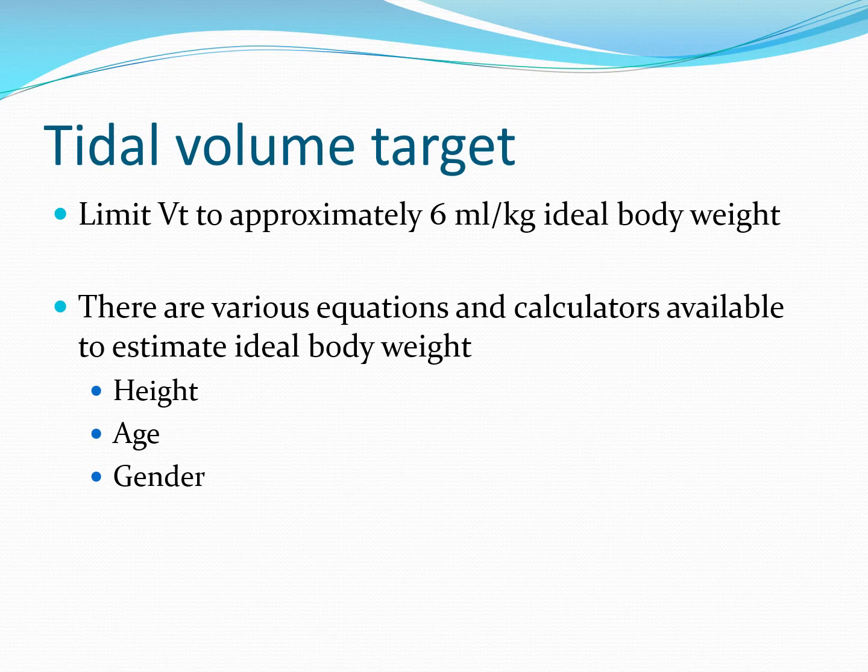There are many different equations and calculators available that will estimate ideal body weight, usually based on height, age, and gender. Be aware that you'll get a range of different values depending on which calculator you use — plugging in my own data gave an ideal body weight range of anything from 75 to 88 kilos.